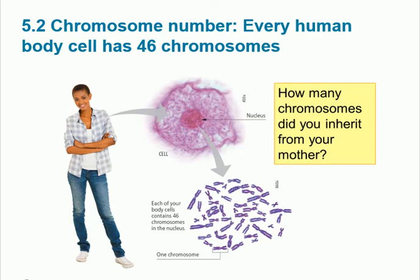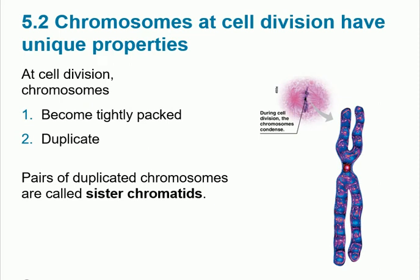We have 23 pairs, so the total is 46 chromosomes. You get 23 from your father and 23 from your mother, totaling 46. A chromosome is tightly coiled DNA that used to be chromatin. When we see chromosomes, it means reproduction — cell division — is taking place, because that is when the chromatin becomes tightly packed.